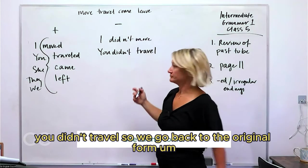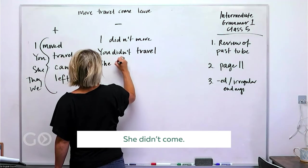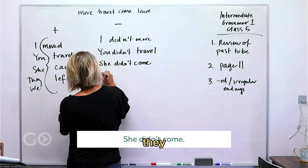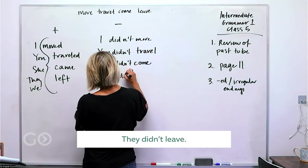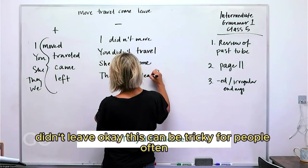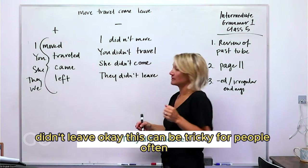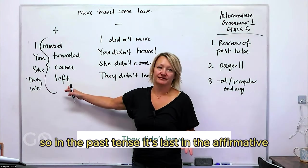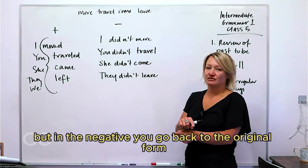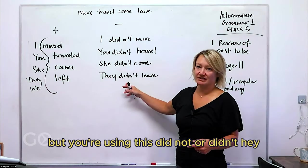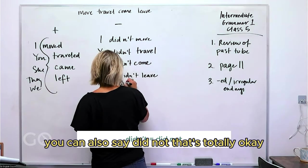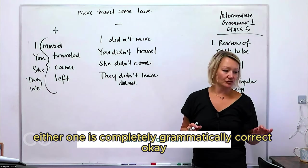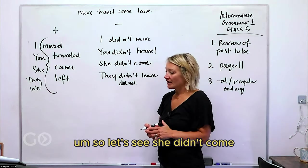You didn't travel, so we go back to the original form. She didn't come, they didn't leave. This can be tricky for people often because you're having to change it. So in the past tense it's left in the affirmative, but in the negative you go back to the original form, but you're using this did not or didn't. You can also say did not—that's totally okay, it's totally normal. Either one is completely grammatically correct.